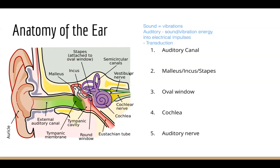The point where sound enters your ear is called your pinna. From the pinna, sound enters the external auditory canal, where the sound vibrations travel all the way until they reach something called your tympanic membrane.